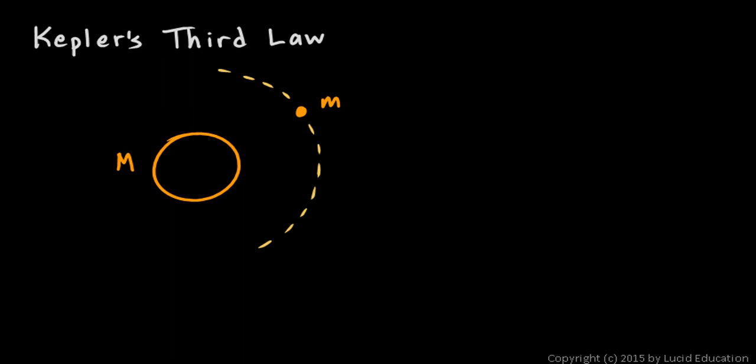Let's take a look at the derivation for Kepler's third law of planetary motion. It's pretty interesting and not all that hard. Kepler's third law deals with two masses—we'll call them big M and little m—and the small one is orbiting the large one. This could be a satellite orbiting the Earth, the Moon orbiting the Earth, or in the situation Kepler was considering, a planet orbiting the Sun.